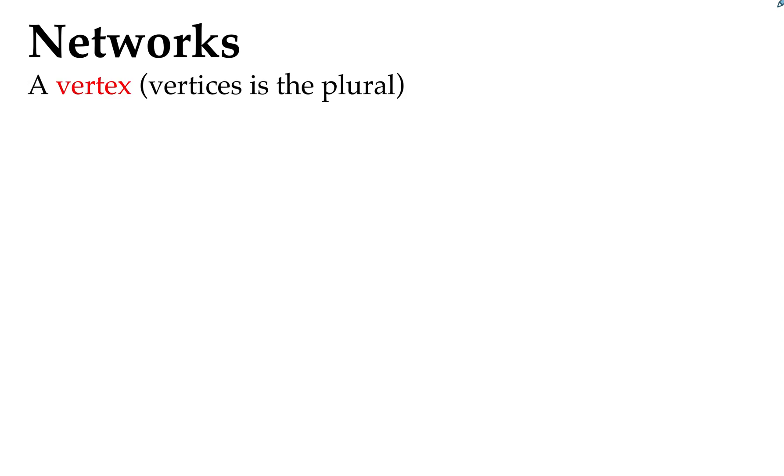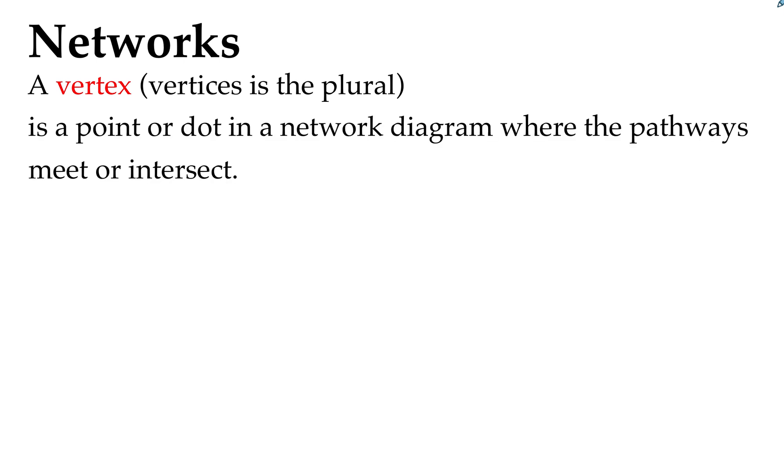A vertex, and vertices is the plural of vertex, is a point or dot in a network diagram where the pathways meet or intersect. In this diagram we've got three vertices labeled A, B, and C, and they are where the pathways meet. Vertices are also known as nodes, particularly in computing.